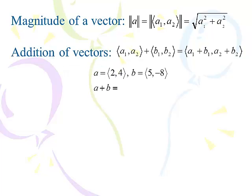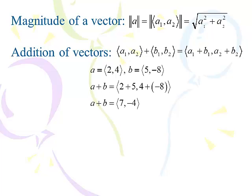To add vectors and find the resultant vector, all you do is add the x-components and add the y-components. So for vectors (2, 4) and (5, -8), we get 2 plus 5 equals 7, and 4 plus negative 8 equals negative 4. The resultant vector of a and b is (7, -4). If we were to draw a parallelogram using a and b as the sides, (7, -4) would be the diagonal.